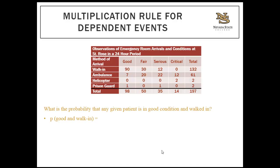Go ahead and pause the video and try to figure out this probability. What is the probability that any given patient is in good condition and walked in? Look at where good condition and walk-in intersect: 90 patients in good condition and walked in, divided by 197 total patients. 90 divided by 197 equals 0.457.